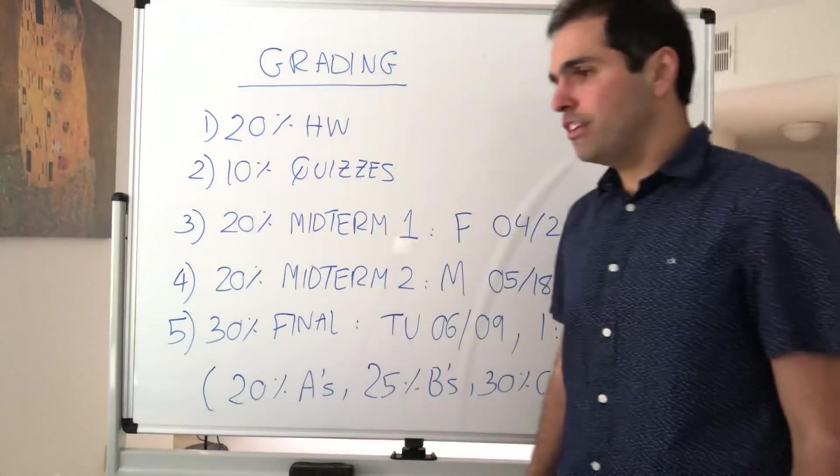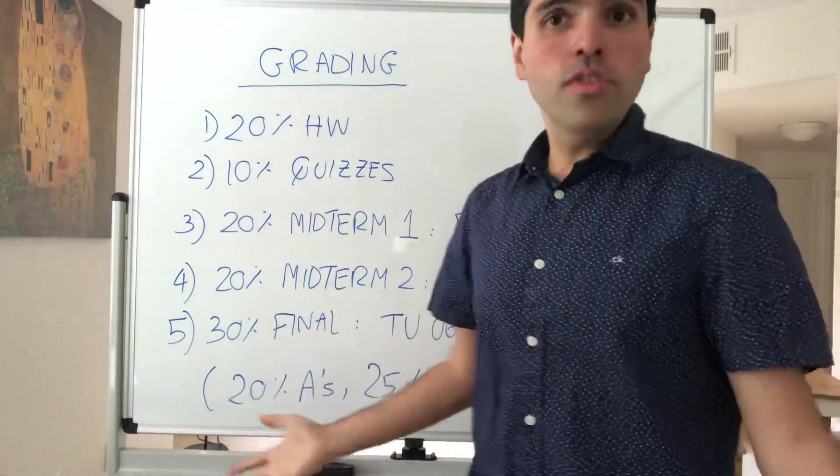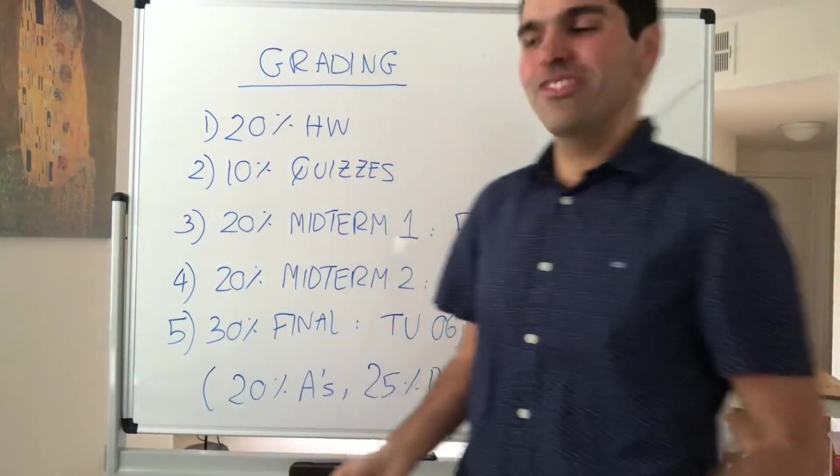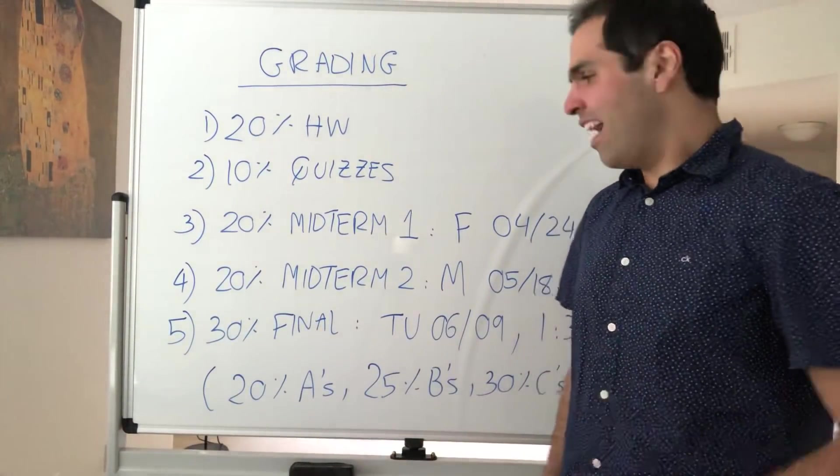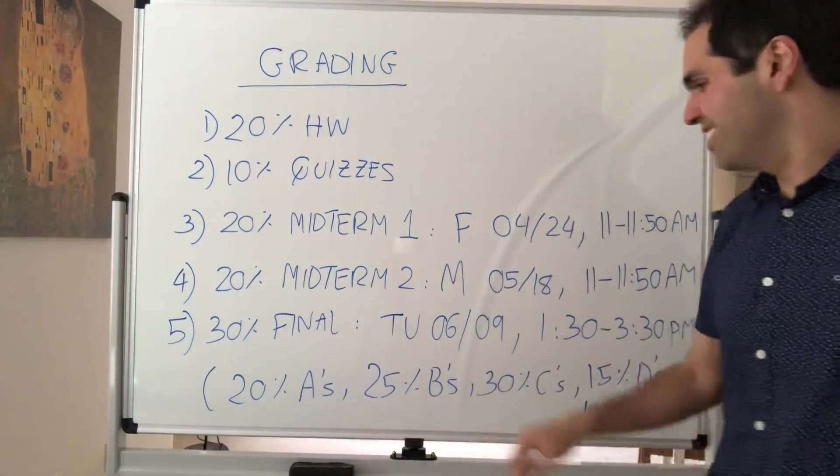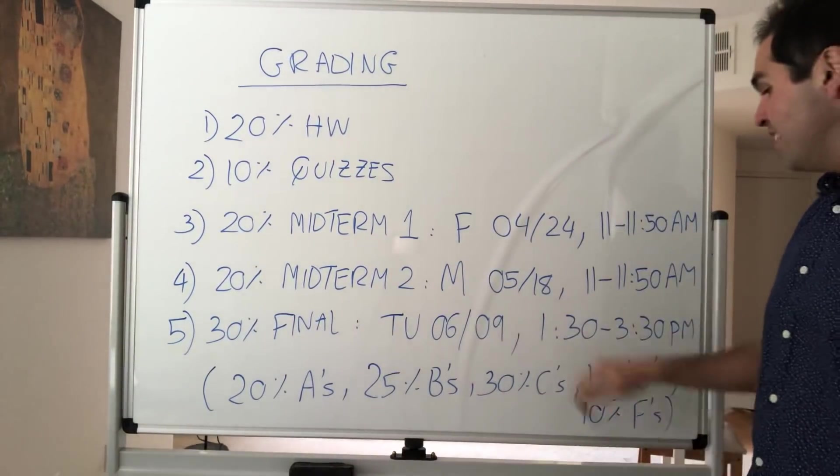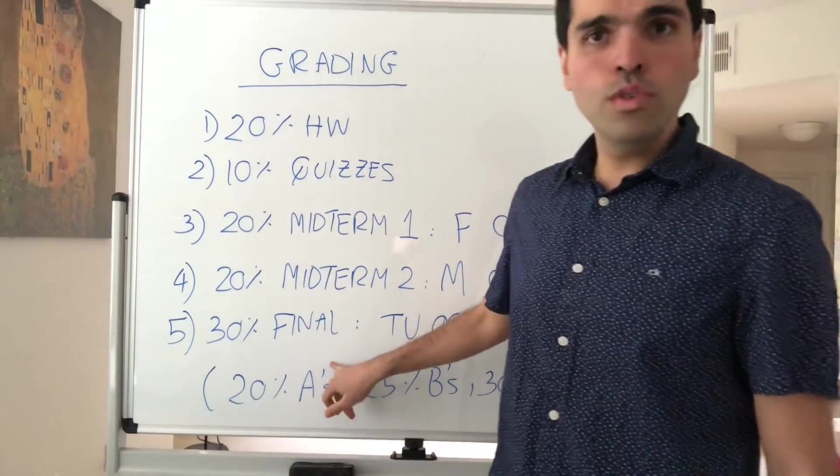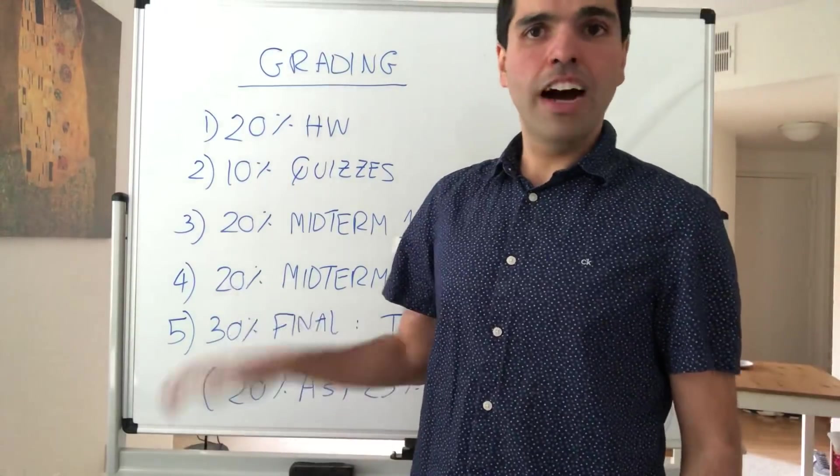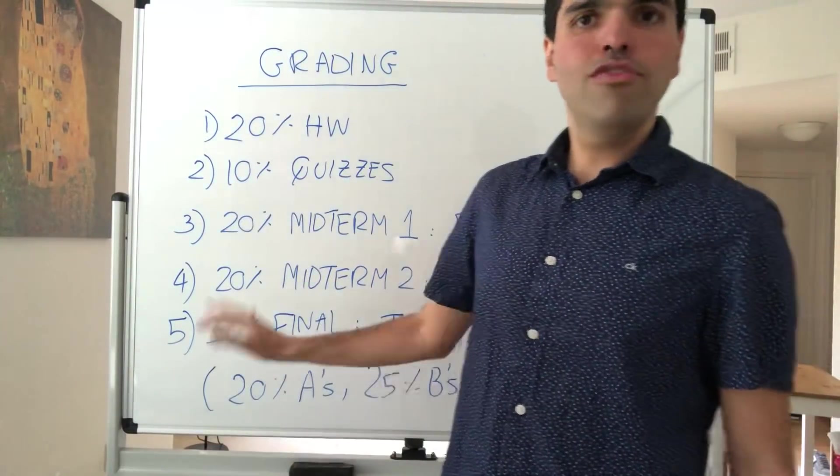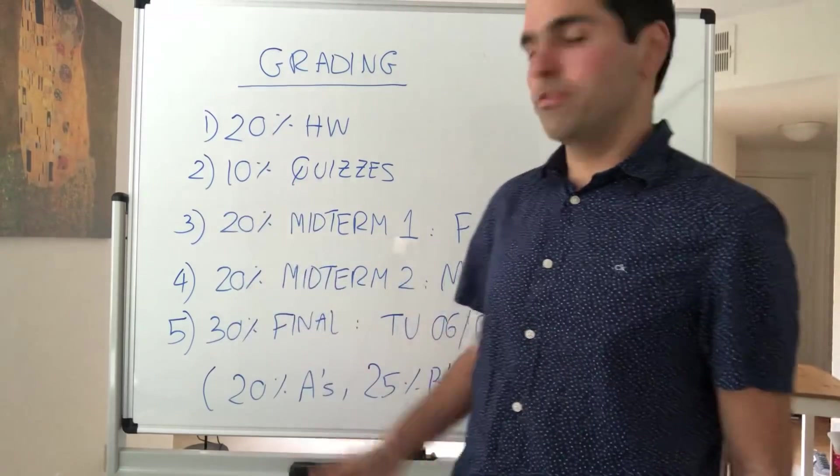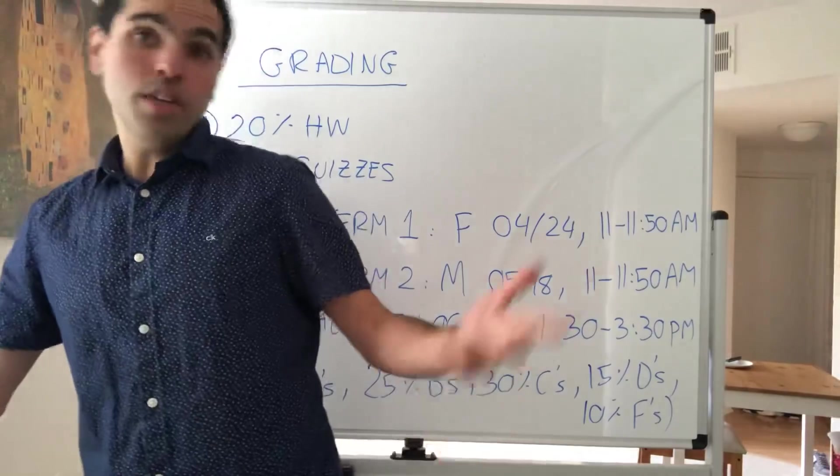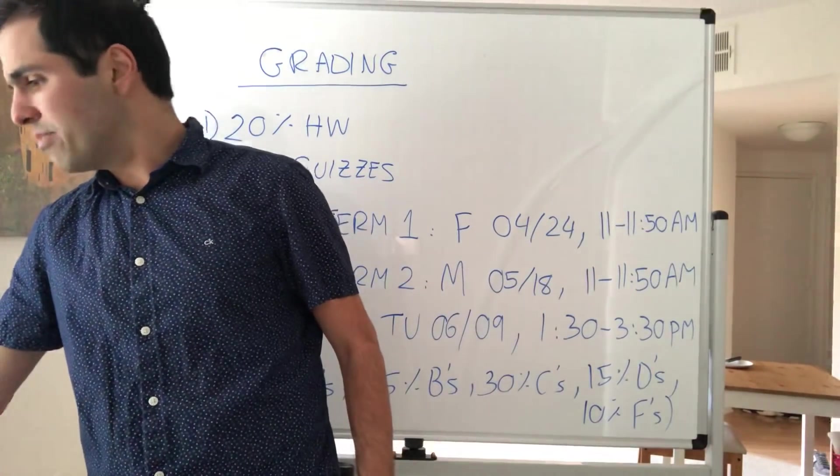And the good news is at the end, I usually give killer finals that are worth 50% of your grade. Well, I might still give you a killer final, but it's only worth 30% of your grade. And it's on Tuesday, June 9th, 1:30pm. But I do have some good news. If you do better on the final than on the midterm, your final can replace one of your lowest midterm scores. So it could potentially count for 50% of your grade.